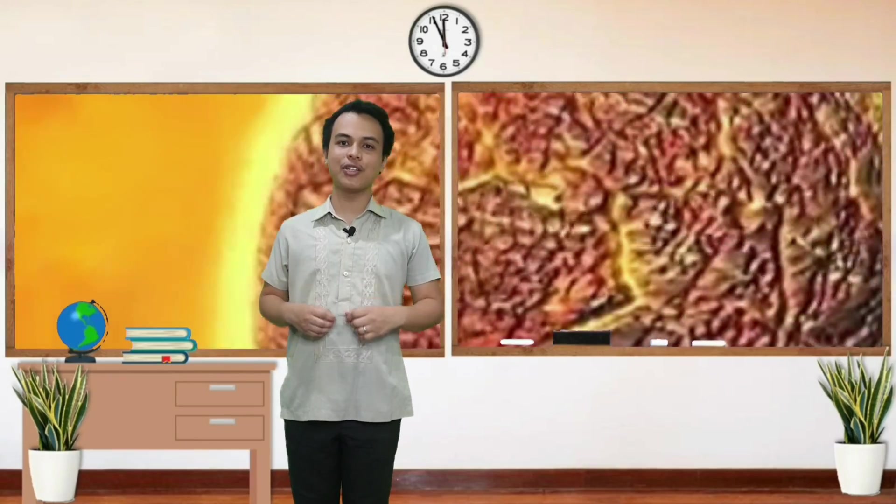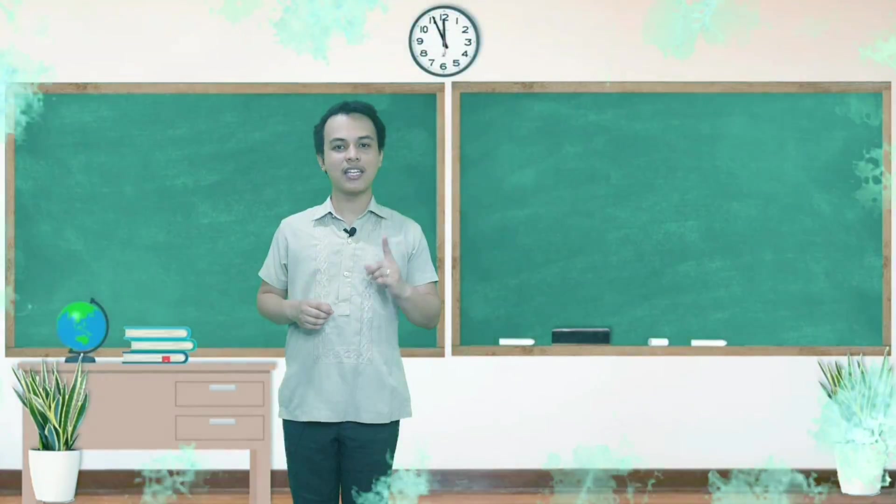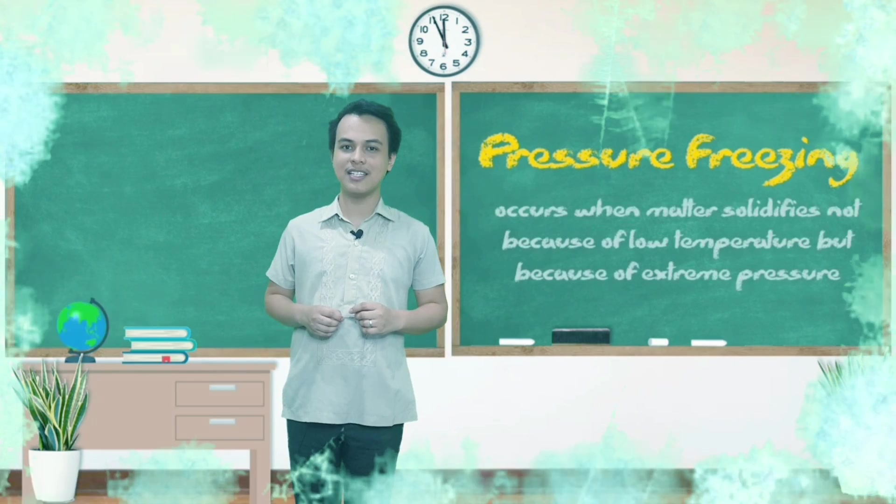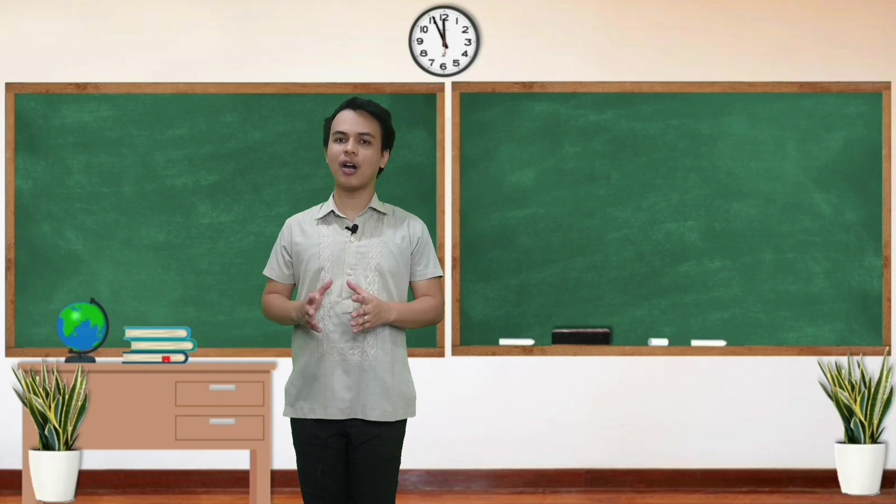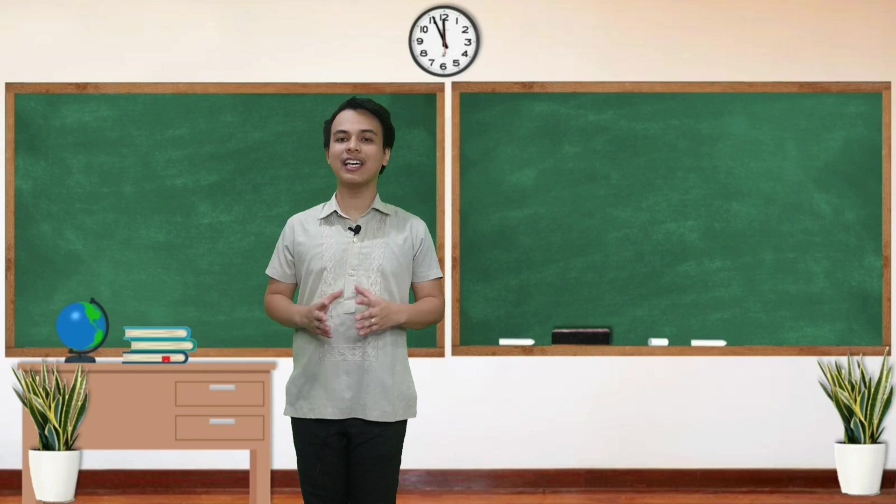Bakit? The extreme temperature of the inner core could have molten the iron and nickel, but it is believed to be solidified as a result of extreme pressure scientifically known as pressure freezing. Pero, paano nga ba nasabi ng ating mga sayantipiko na ang inner at outer core ay gawa sa iron and nickel alloy?